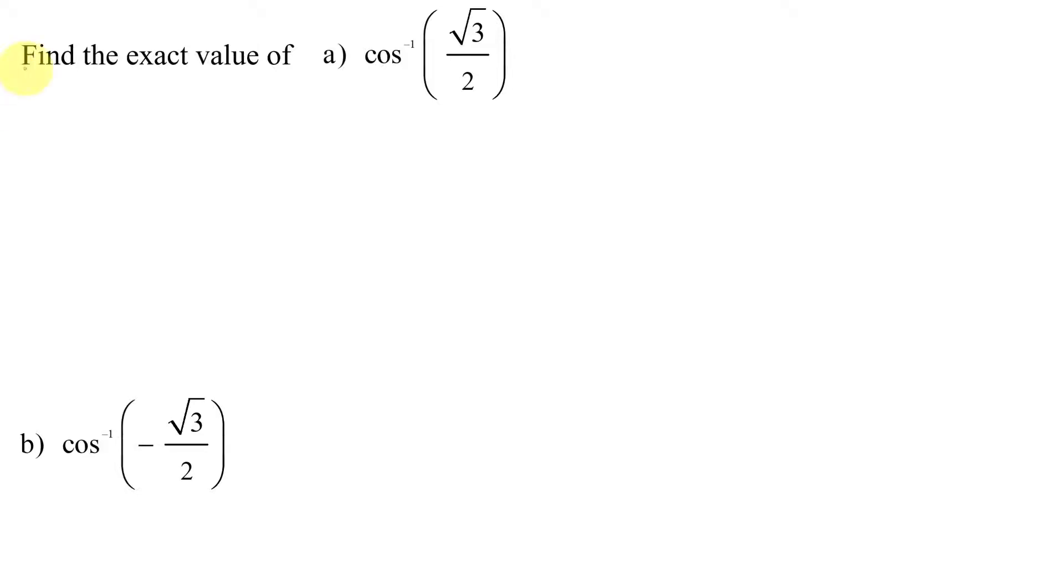In this example, I need to find the exact value of, in part A, the inverse cosine of the square root of 3 over 2, and in part B, the inverse cosine of the negative square root of 3 over 2.